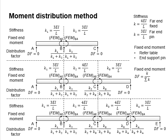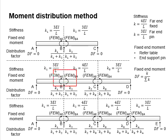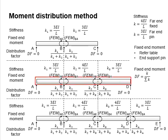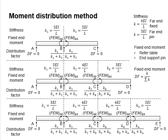Through this process, we will consolidate the fixed-end moment after the moment distributions. The summation of the fixed-end moments from both sides of the support will be equal to zero. This consolidated fixed-end moment will be determined as the final internal moment acting on the member, and the continuous beams are then designed to resist these fixed-end moments.